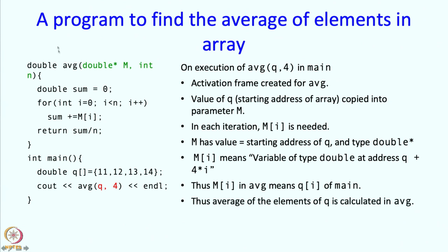So, effectively, what is going to happen is that we are going to calculate the average of q0, q1, q2, q3, which is exactly what we want. This will calculate the sum of the elements and then return divided by 4, so it will actually return the average exactly like we wanted.